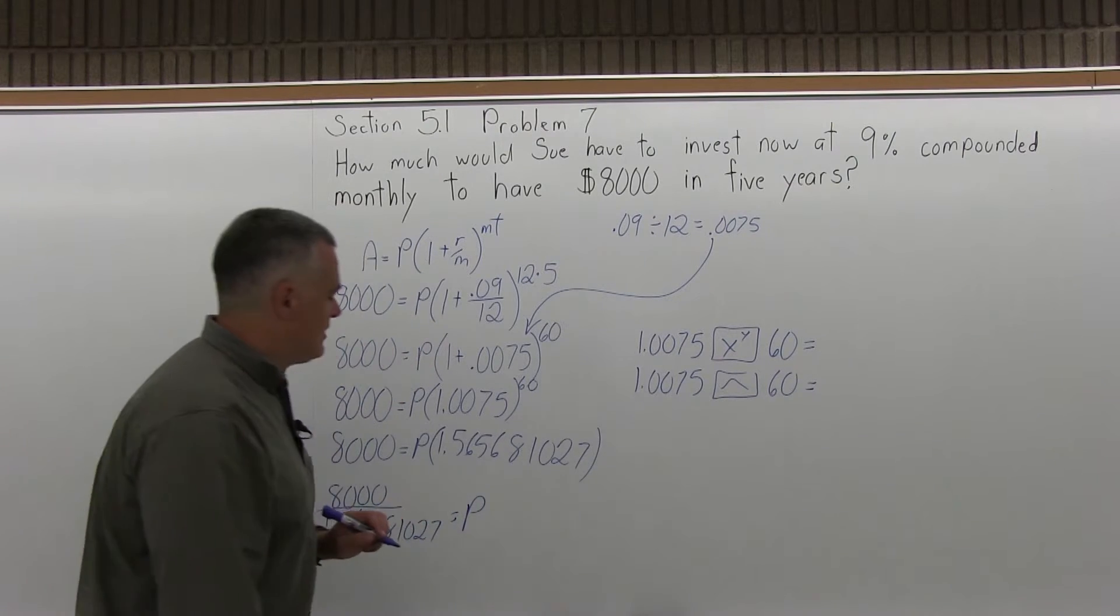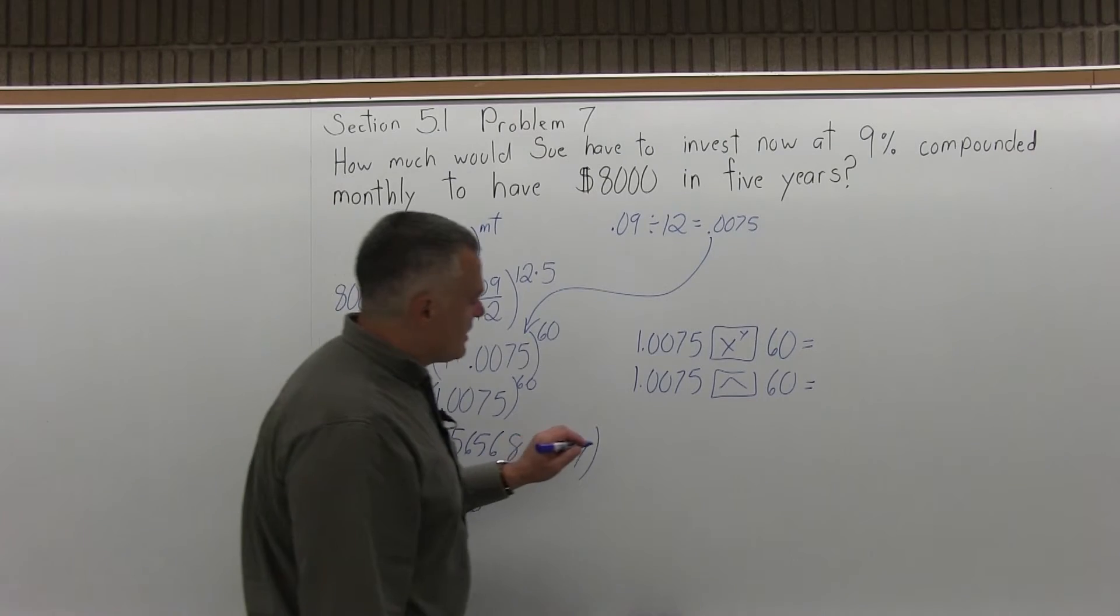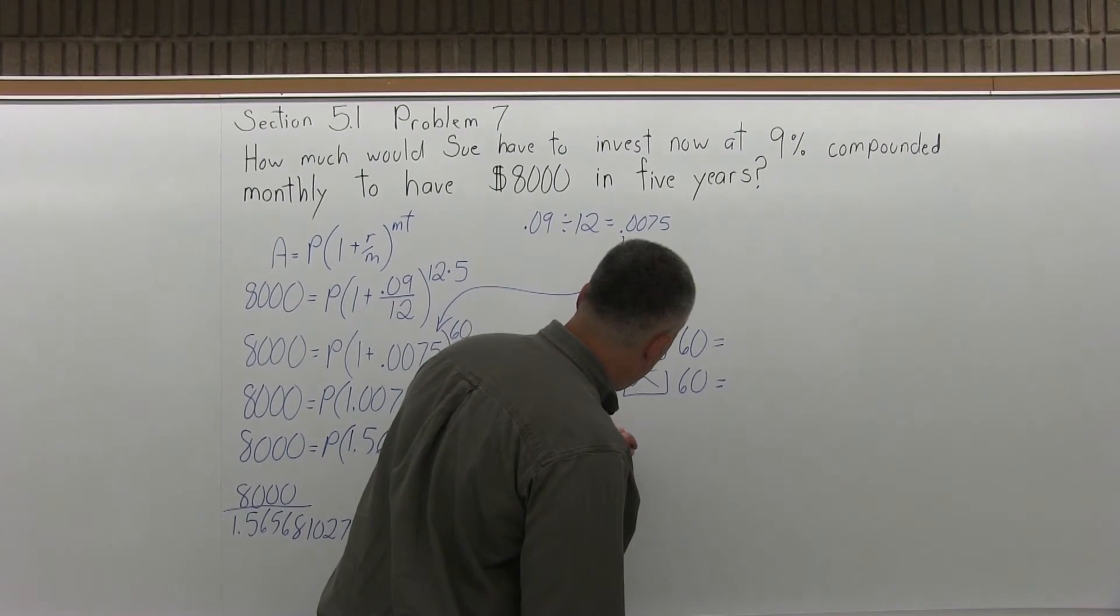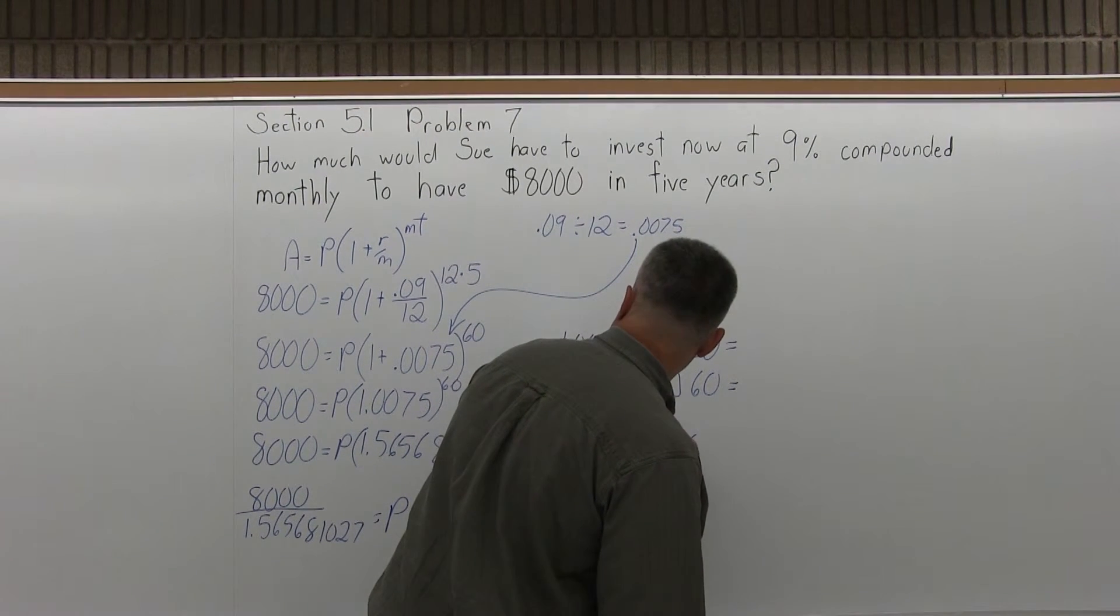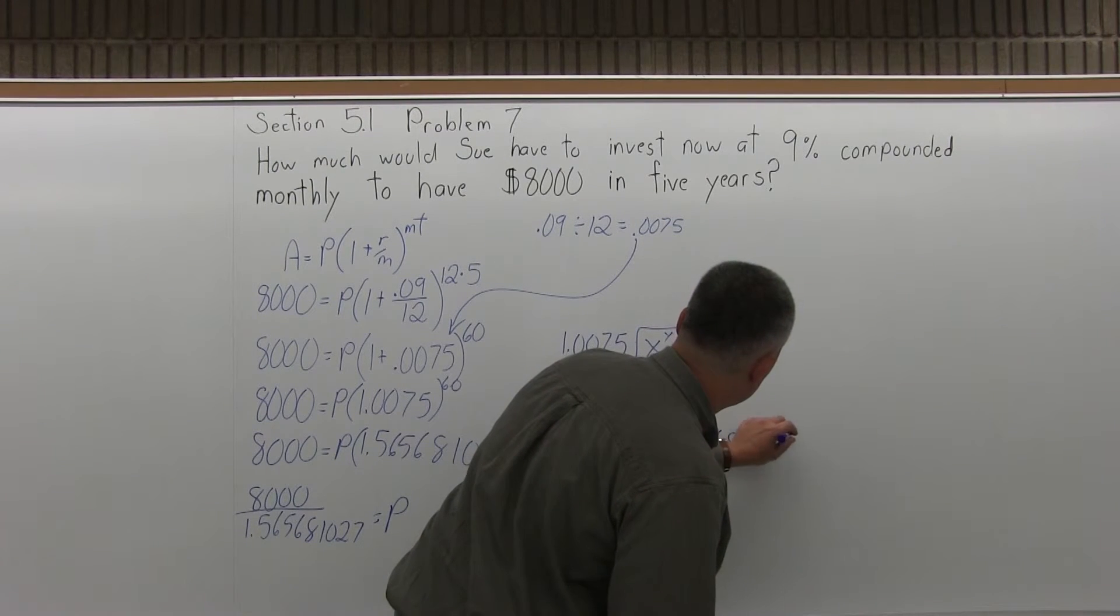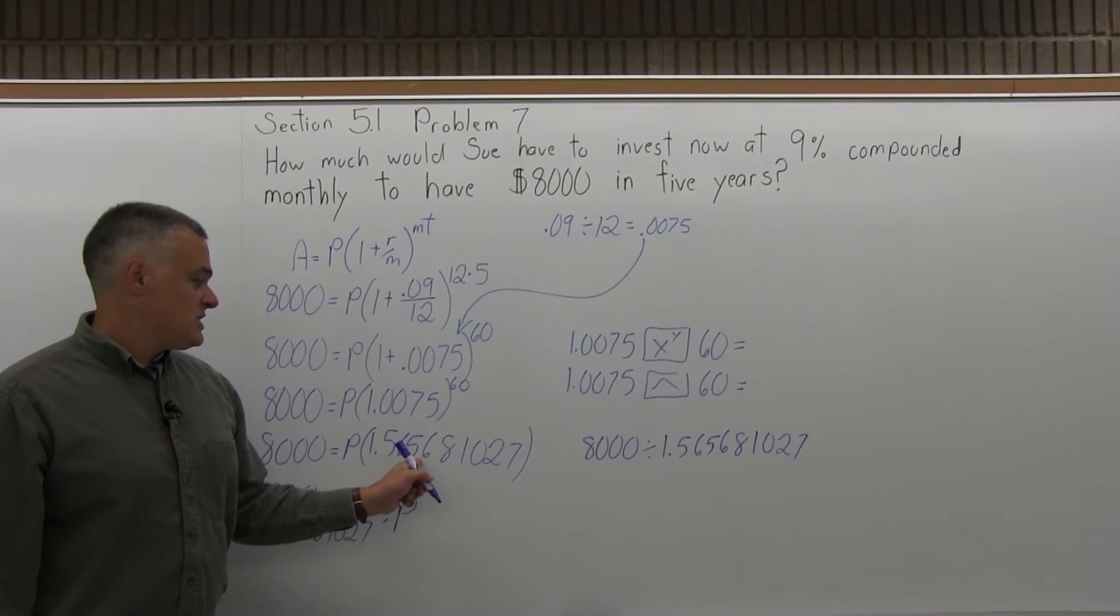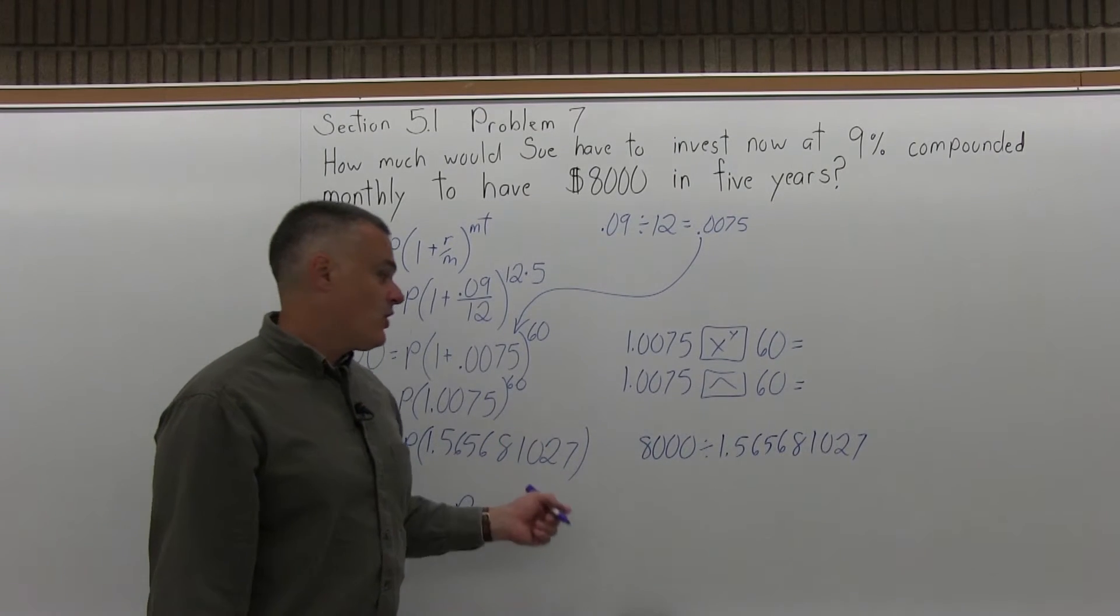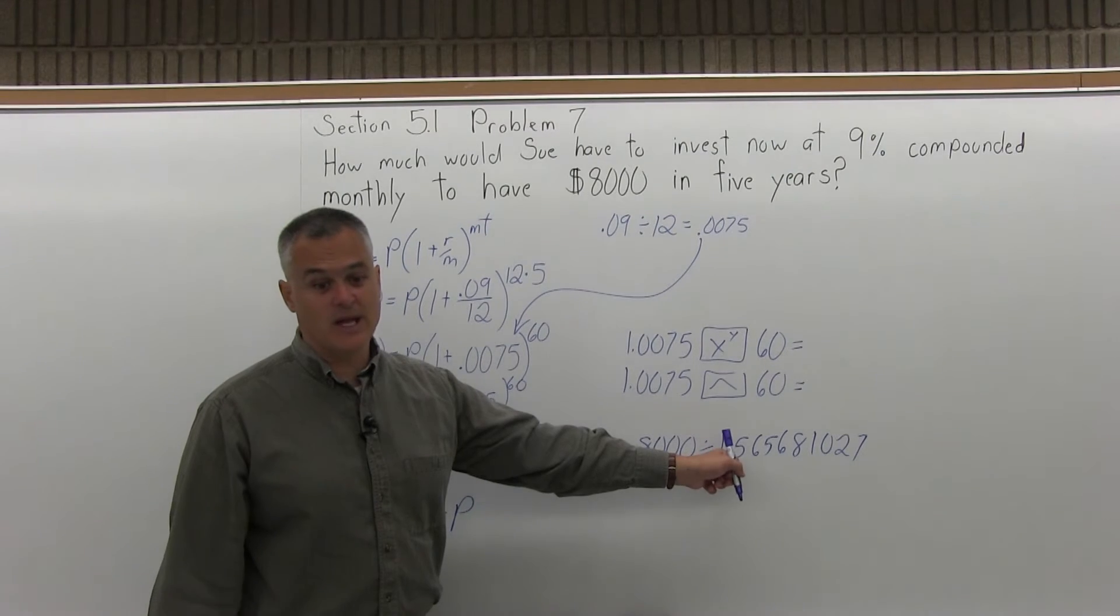That is not a division that I can figure out in my head. So with the calculator, you want to enter the 8,000 first, divide by that decimal of 1.565681027. Now, that happens to be on the screen of my calculator now, because I just did a computation where that was the answer. I could just clear the whole thing and enter it all again.